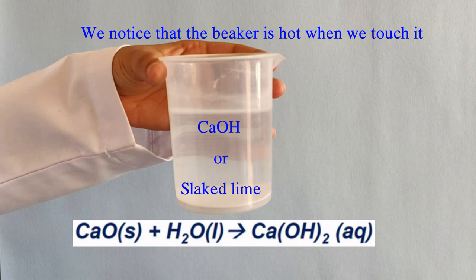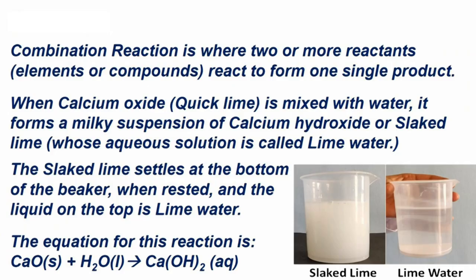What type of reaction has taken place? It is a combination reaction. A combination reaction is where two or more reactants react to form one single product. When calcium oxide is mixed with water, it forms a milky suspension of calcium hydroxide, or slaked lime. The slaked lime settles at the bottom of the beaker when rested, and the liquid on top is called lime water.